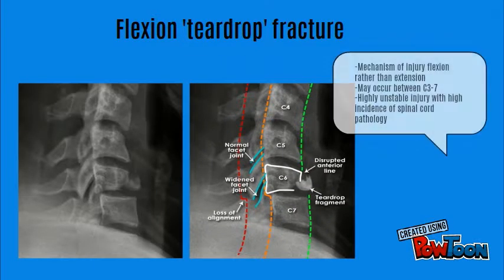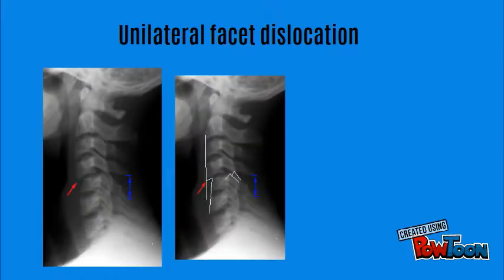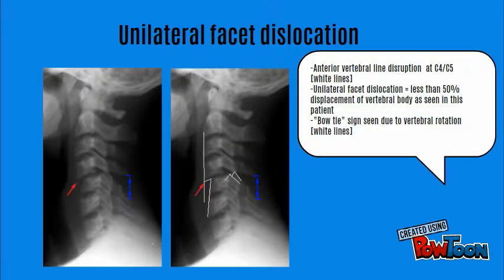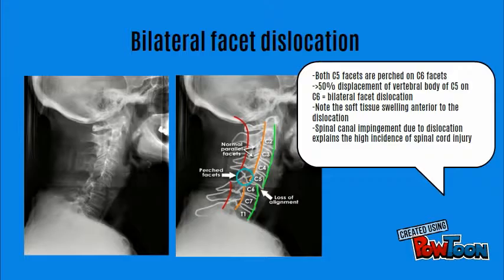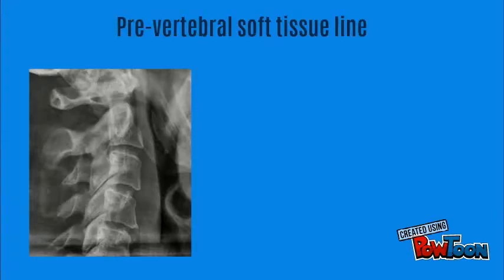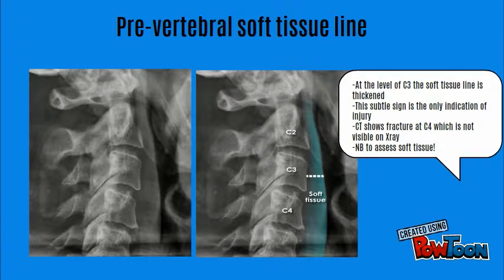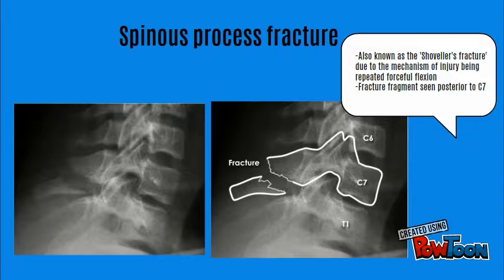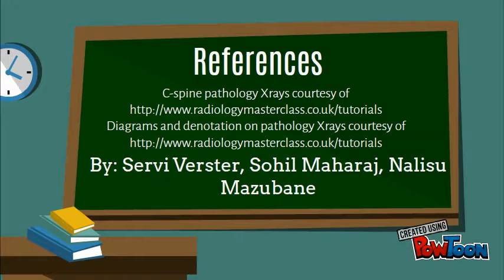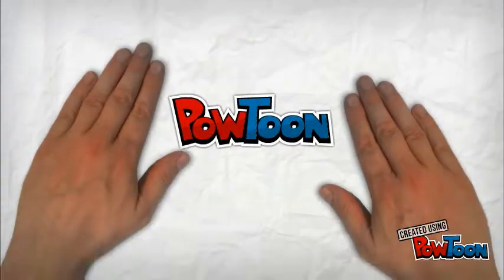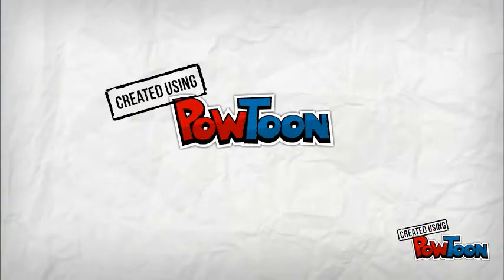Flexion Teardrop Fracture. Unilateral Facet Dislocation. Bilateral Facet Dislocation. Pre-vertebral Soft Tissue Line. Spinous Process Fracture. Rotated Facet Dislocation.